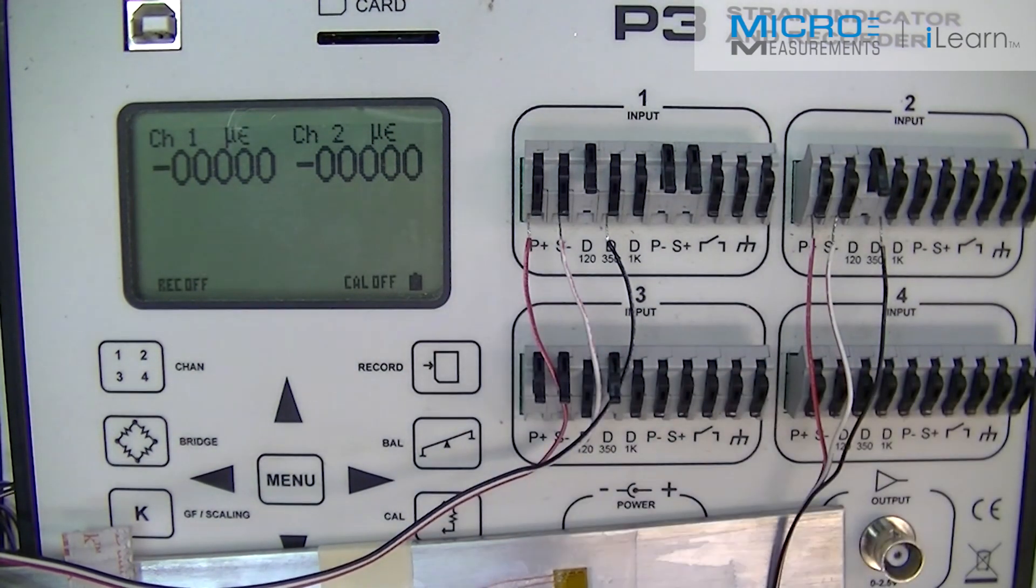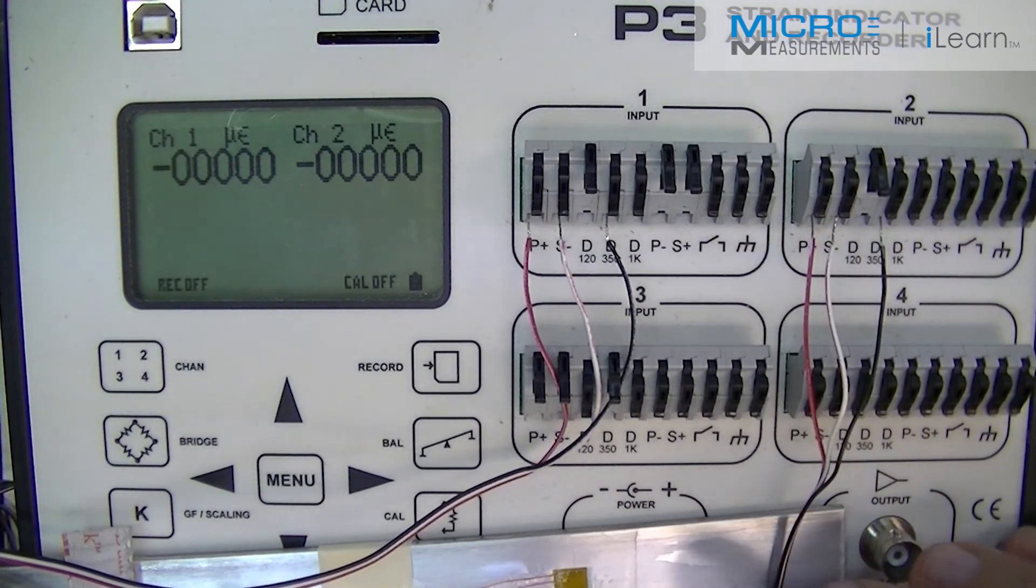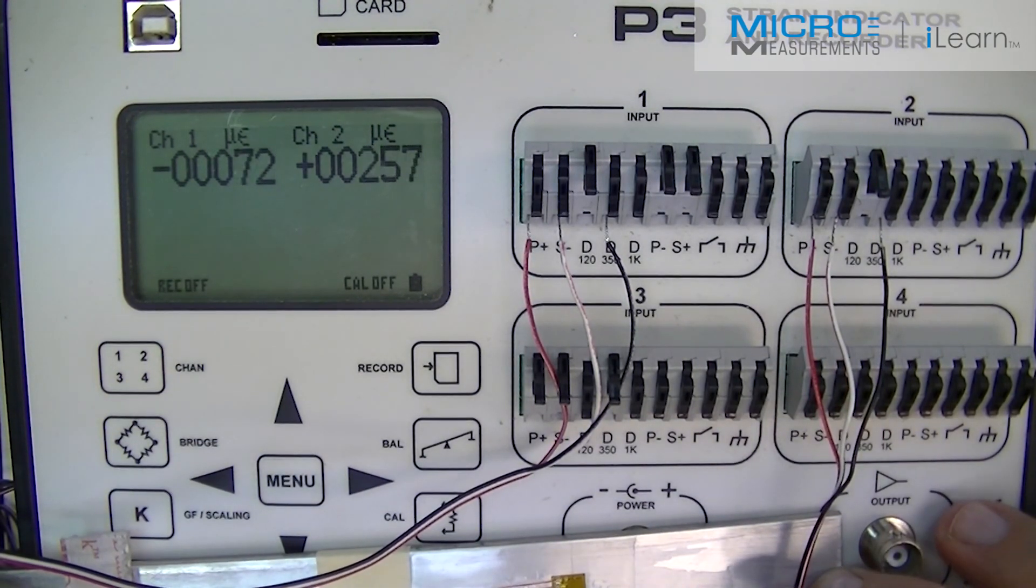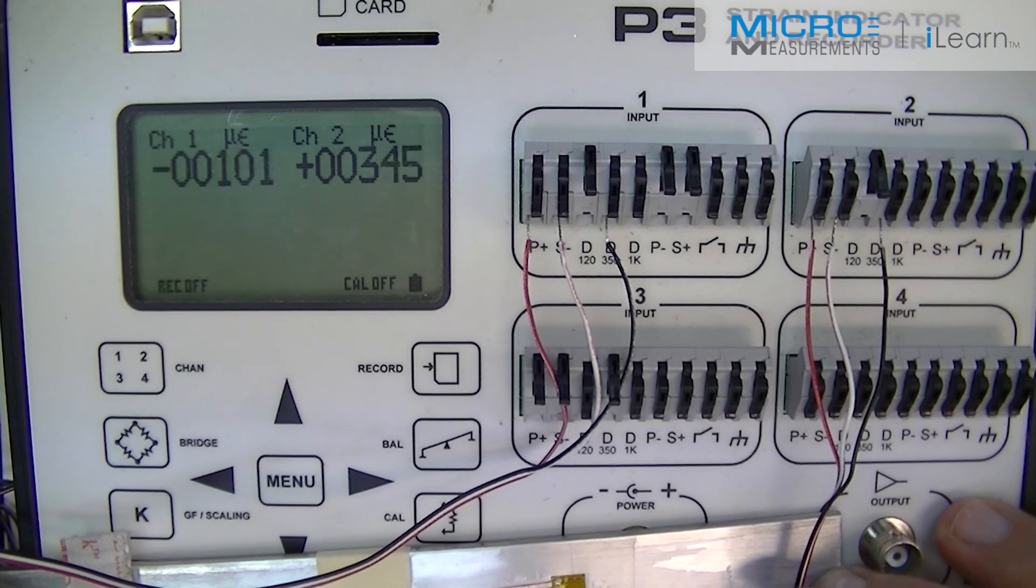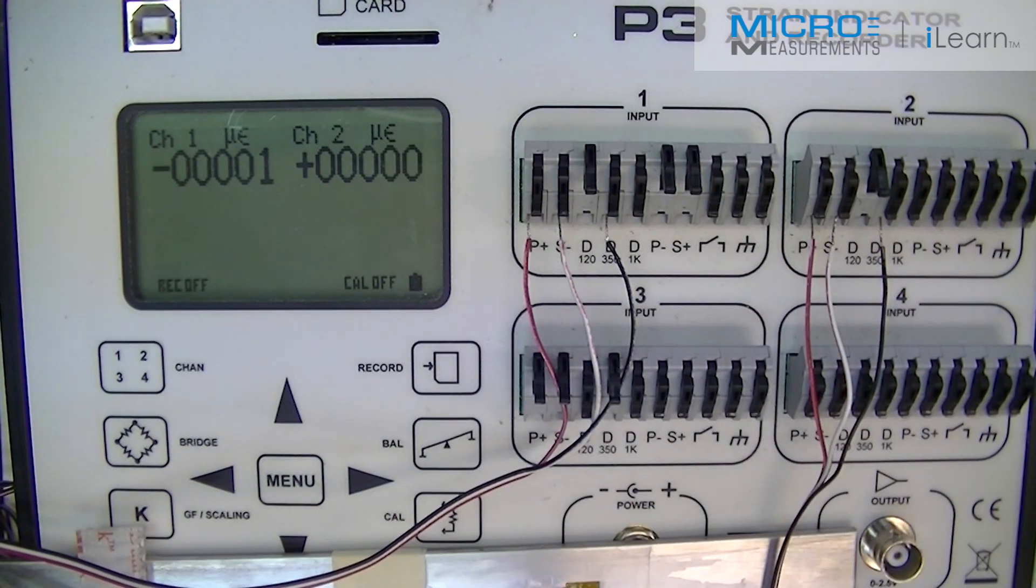If I can apply a load to this beam, you can see several hundred microstrain, especially on the linear gauge, and then release that load, it should return to zero as it does. That is your best indication that the strain gauge is functioning correctly, and that your installation is well bonded.